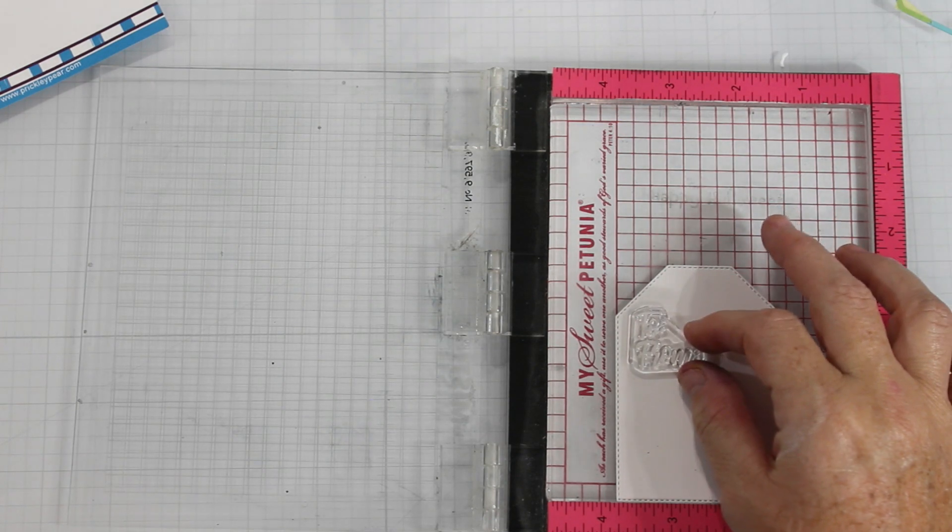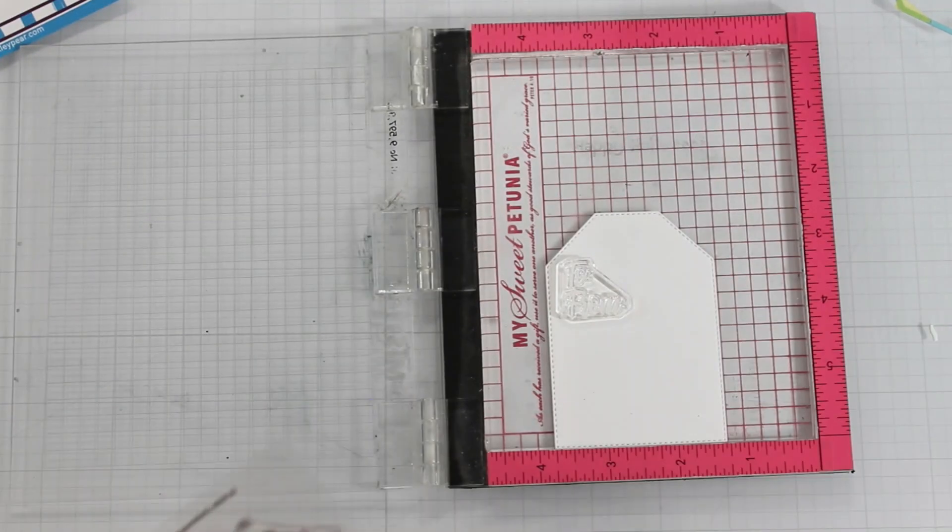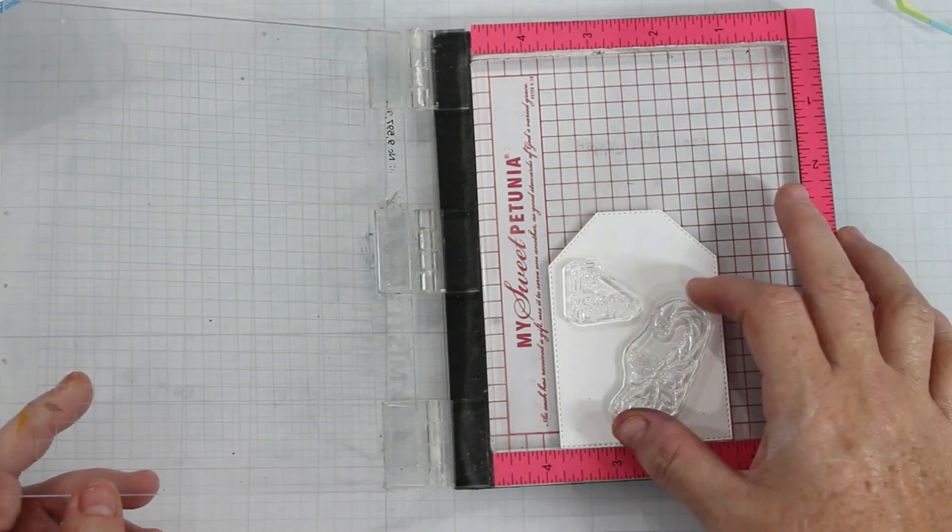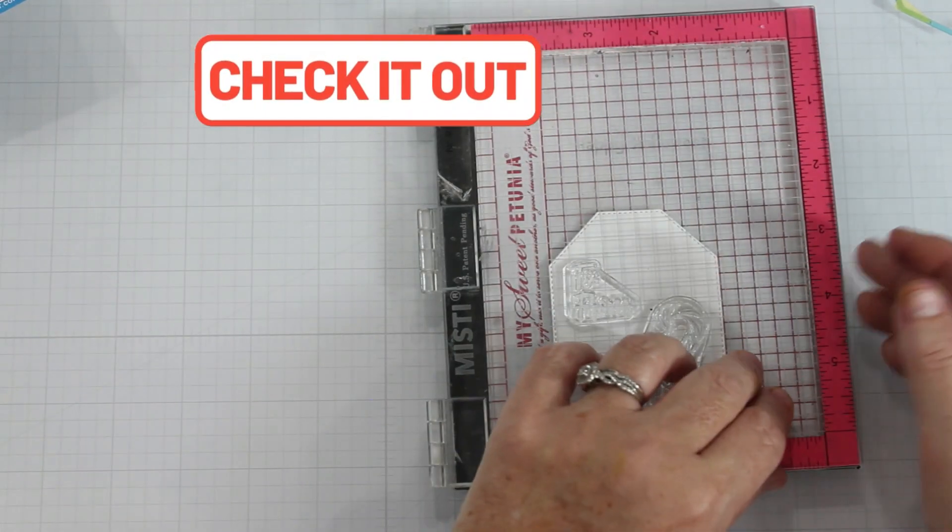I chose to use the Christmas Tags clear stamp set and you can find all of the information about the hop and the products that I'm using in the description box below.